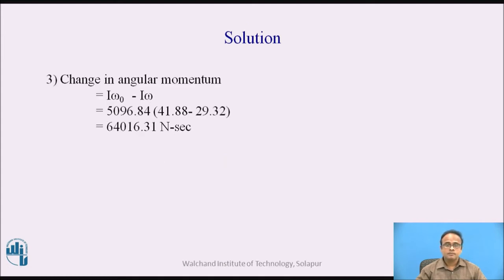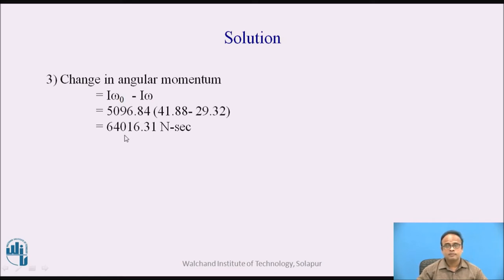For change in angular momentum, the expression is I omega 0 minus I omega, that is, initial angular momentum minus final angular momentum. I is constant at 5096.84, which is taken out of the bracket. Omega 0 is 41.88 and final omega is 29.32. We get the change in angular momentum as 64016.31 Newton·meter·second.